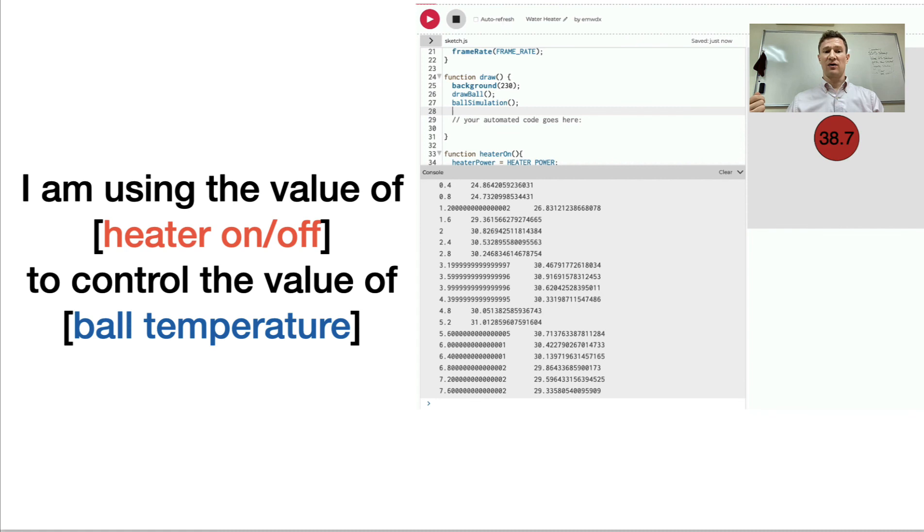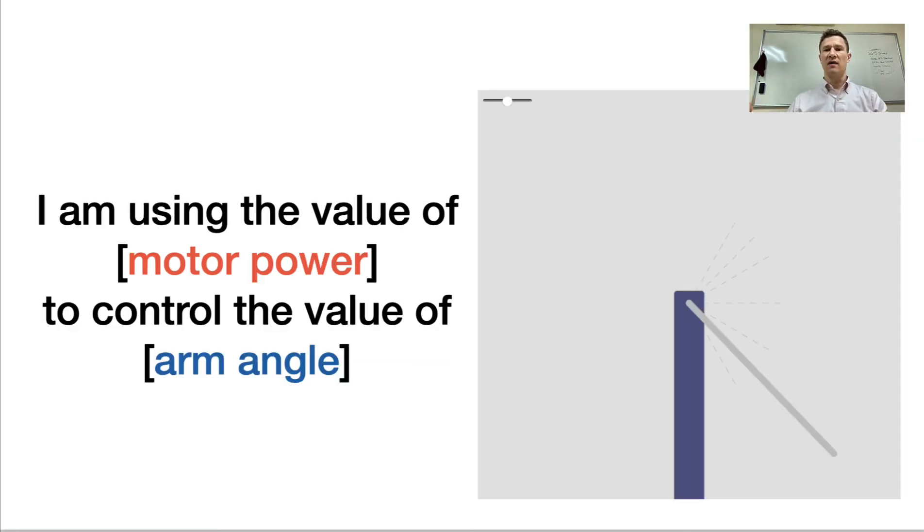In the case of the heater, I'm using the value, a Boolean value of the heater being on or off to control the value of the ball temperature. In the case of the arm, I'm using the value of motor power to control the value of arm angle. This is what we are talking about when we're talking about control algorithms.